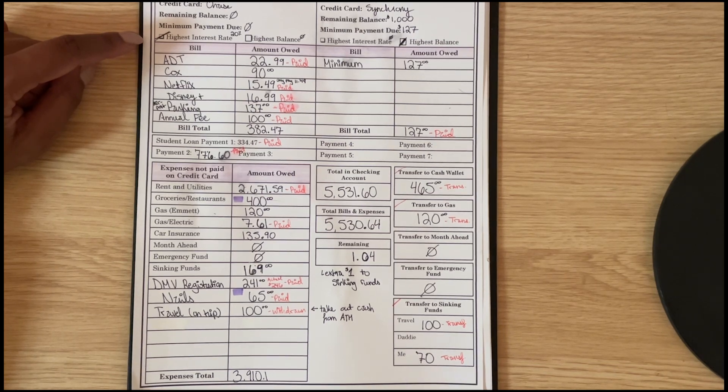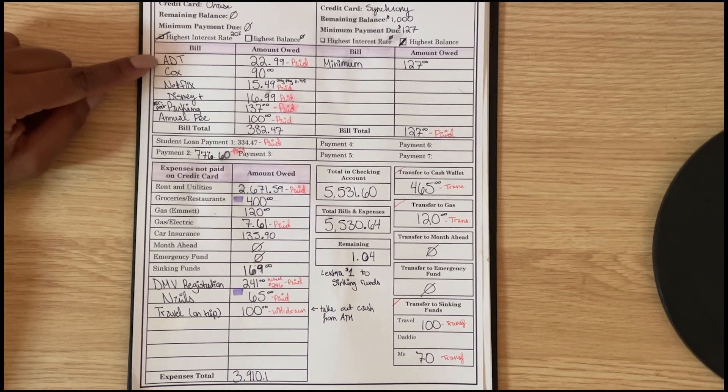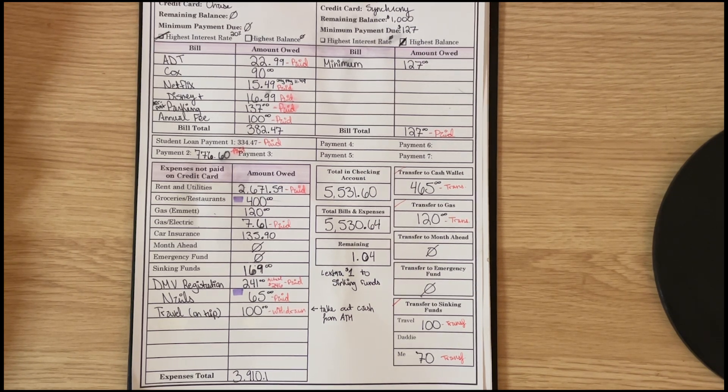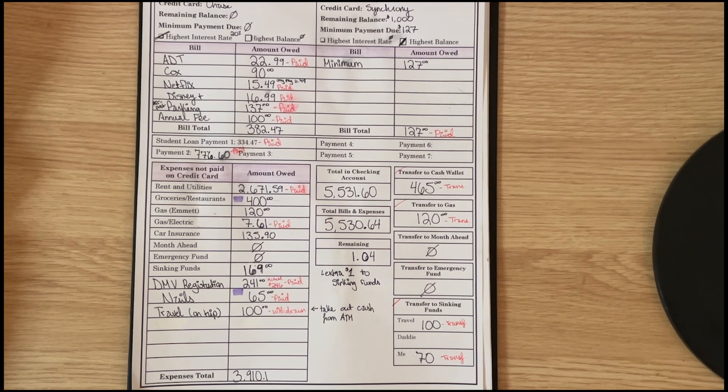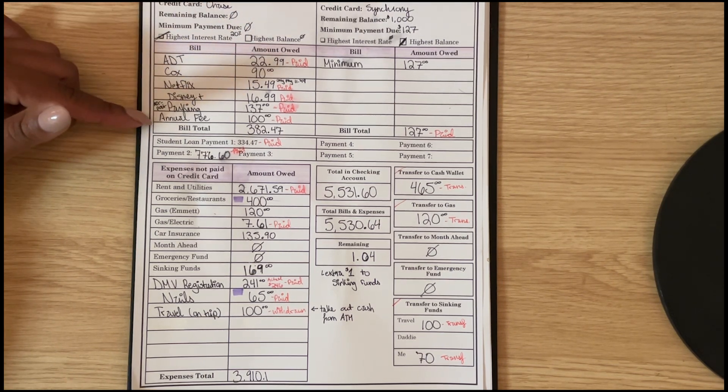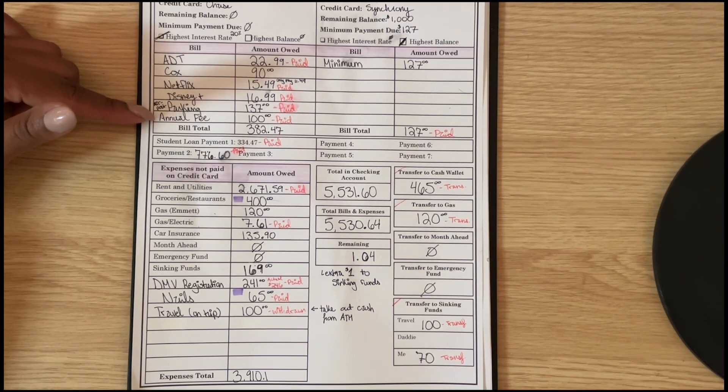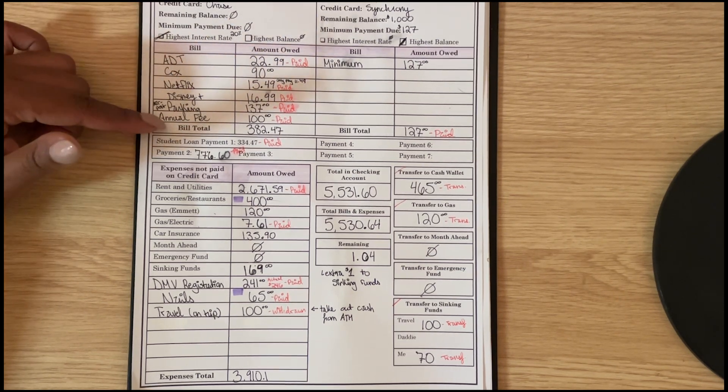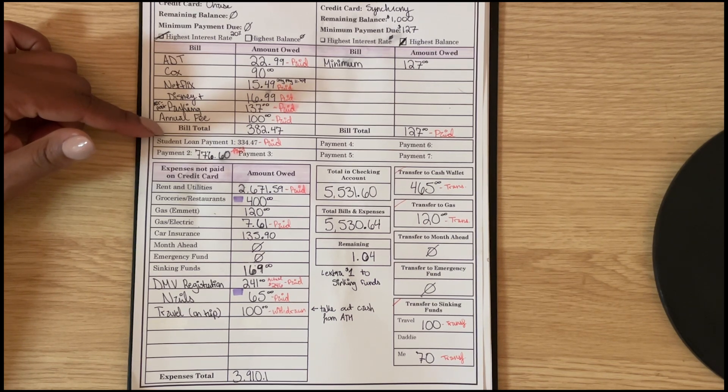ADT came out this month, Cox is going to come out. ADT is $22.99, Cox I actually lowered it a few dollars so that is $90. Netflix is $15.49, Disney Plus is $16.99. I am flying home so I need to pay for parking - parking is $137. And then this card has an annual fee, the annual fee is $99, but I just go ahead and round up to $100. So the total that will go on my Chase credit card is going to be $382.47.